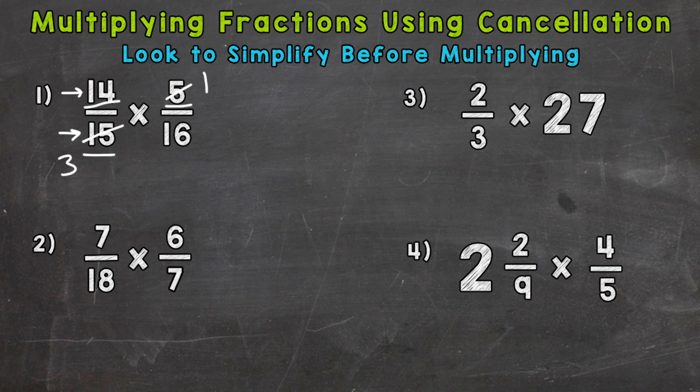Let's take a look at 14 and 16 to see if they have any common factors besides 1. And they do. They have a common factor of 2. So let's divide both of those by 2. 14 divided by 2 is 7. 16 divided by 2 is 8.